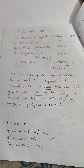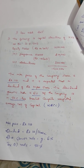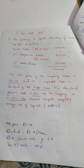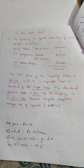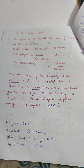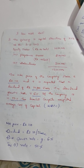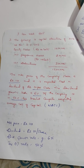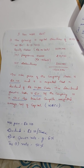The question is: the following is the capital structure of XYZ as on 31-3-2013. Equity shares of Rs. 10 each: 10 lakh. 10% preference shares of Rs. 100 each: 2 lakh. 12% debentures: 3 lakh rupees. Total capital is Rs. 15 lakh.